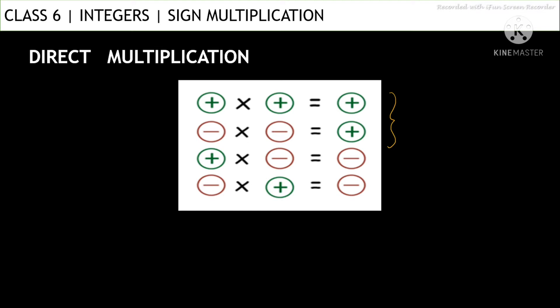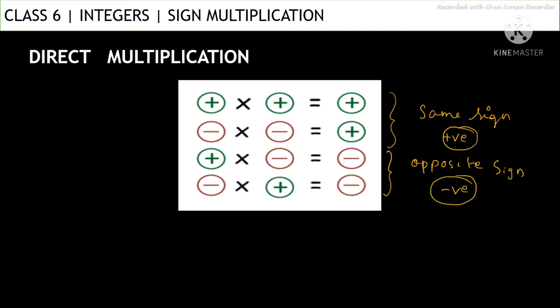We get a positive answer only when we are multiplying the same sign. When two positives are multiplied we get positive, and when two negatives are multiplied we also get positive. Hence, when two integers of the same sign are multiplied we get a positive answer. In the other two cases, when opposite signs are multiplied — positive with negative or negative with positive — we always get a negative sign.